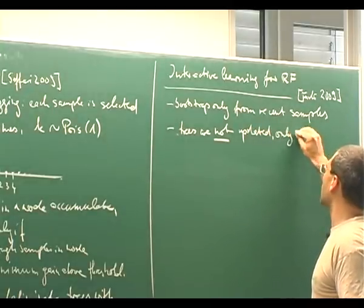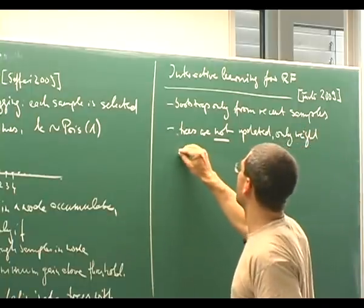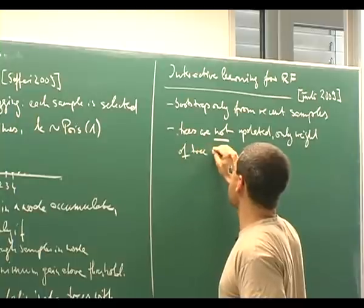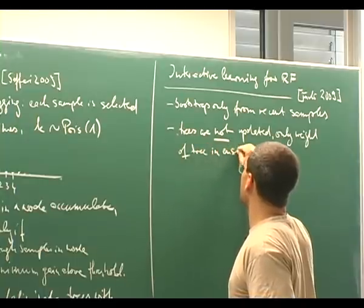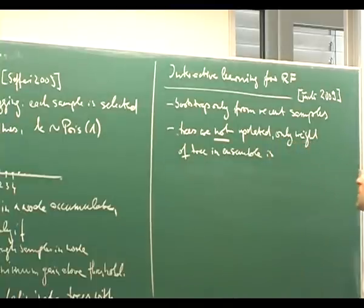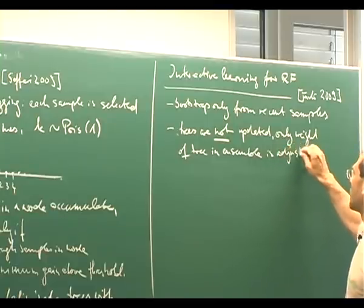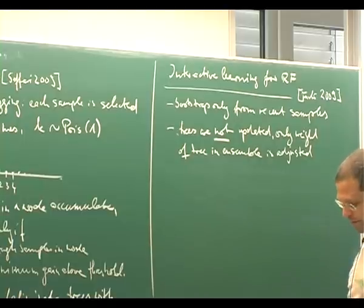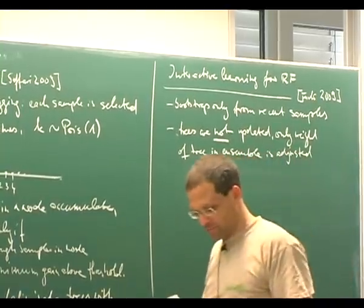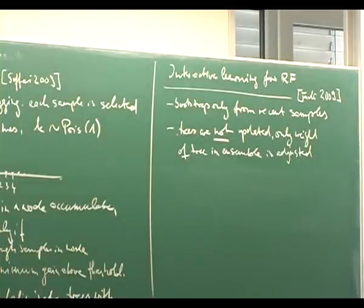But only the weight of a tree in the ensemble is changed over time. It's adjusted according to its out-of-bag error, and then trees with really bad out-of-bag error are deleted and forgotten.